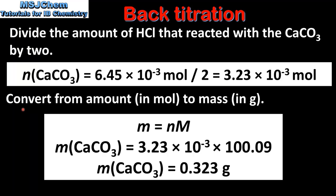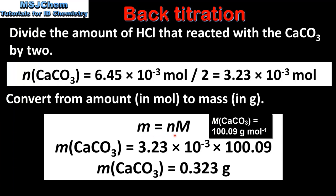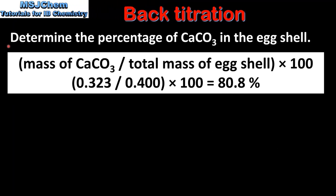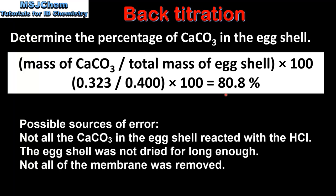The final step is to convert from moles to mass in grams using the equation: mass = moles × molar mass, giving a mass of calcium carbonate of 0.323 grams. Finally, we determine the percentage of calcium carbonate by dividing 0.323 g by the total eggshell mass of 0.4 g and multiplying by 100, giving 80.8%. This tells us the eggshell is approximately 81% calcium carbonate by mass.